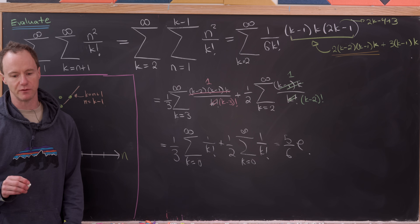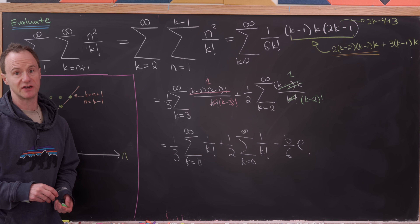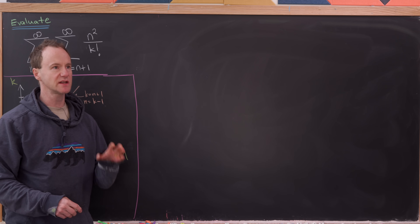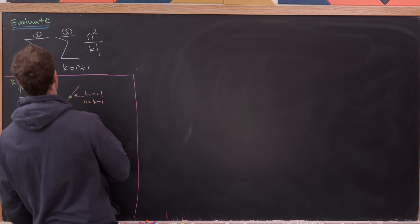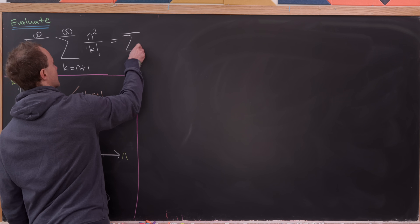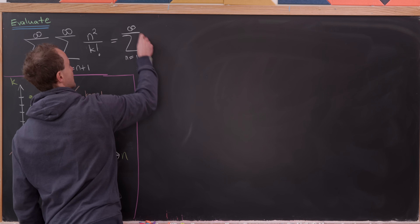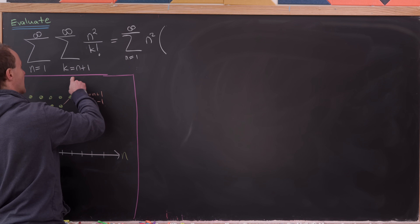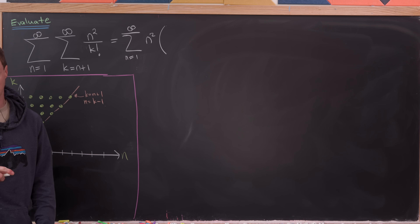So that gives us the final value of our sum using the first method. Now let's look at a second strategy. This next strategy is different — we're not going to change the order of summation. Instead, we factor n squared out of the inner sum, giving the sum as n goes from 1 to infinity of n squared times the sum as k goes from n plus 1 to infinity of 1 over k factorial.